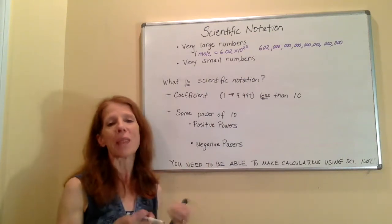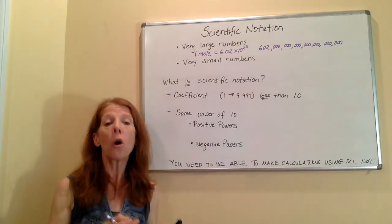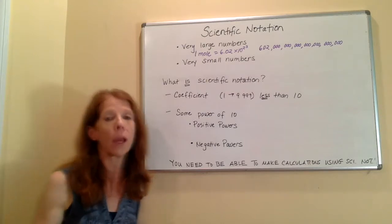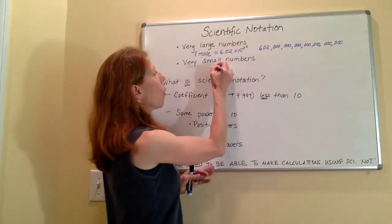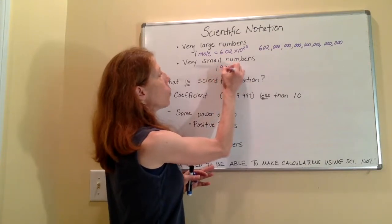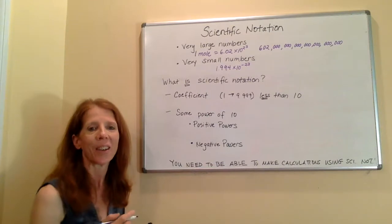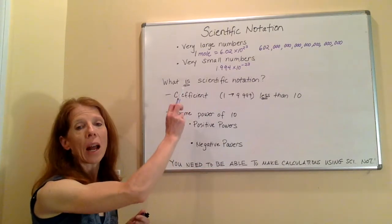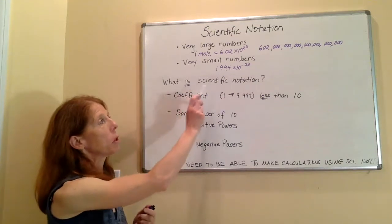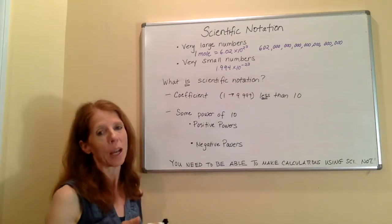Because atoms and molecules are so, so, so tiny, we also deal with very, very small numbers in chemistry. For example, the mass of one carbon atom is 1.994 times 10 to the negative 23rd. Okay, now, I don't know about you, but again, I don't want to write that out longhand. It's much simpler to use it in that form. So that's why we use scientific notation.